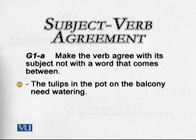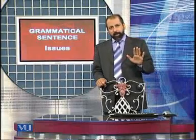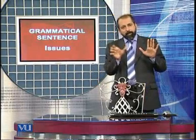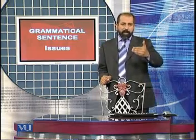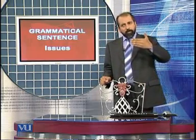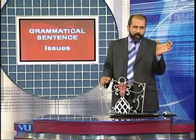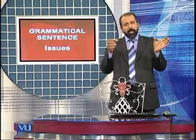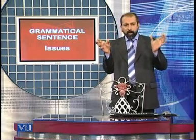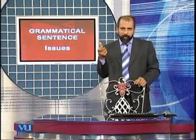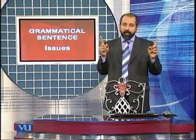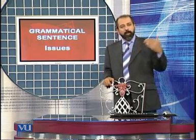Here's the example: 'The tulips in the pot on the balcony need watering.' 'The tulips' is the subject in plural form. 'In the pot' and 'on the balcony' are two prepositional modifiers — one with 'in,' second with 'on.' The verb is 'need.' When the tulips are plural, the verb is plural. So: 'The tulips in the pot on the balcony need watering.' Subject and verb both agree, forgetting about the words in between.